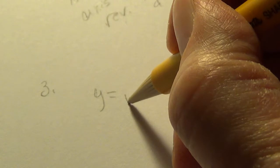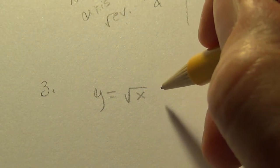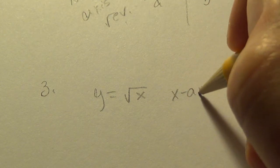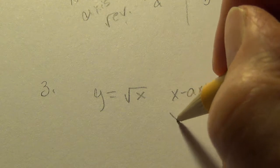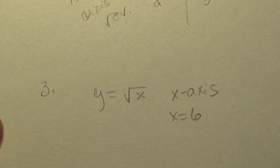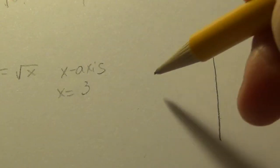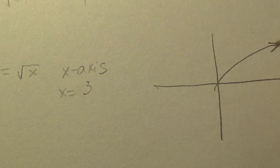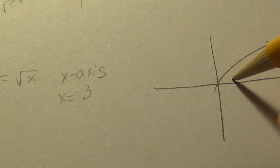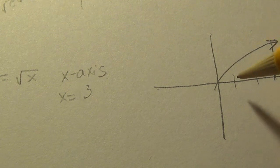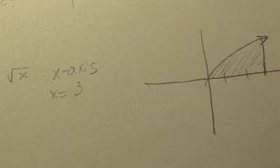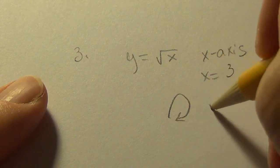Take the area bounded by these lines. y equals square root of x, the x-axis, and x equals 3. Let's take that area. So let me sketch that. So square root of x, something like that. x equals 3 right here, and the x-axis. So we have this area right here.